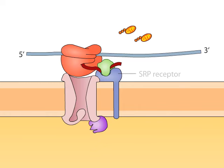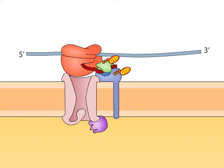GTP molecules bind to the SRP and the SRP receptor. The GTP binding triggers the transfer of the signal sequence from the SRP to a membrane channel called a translocon.